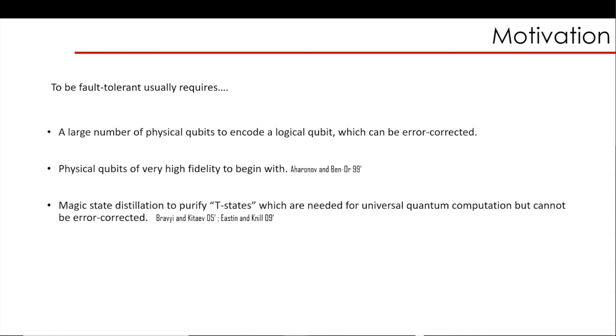And on top of that, you can only correct some processes this way. You actually need, on top of error correction, to add what is called state distillation, which introduces additional components needed to do universal quantum computation. This also complicates things and adds a lot of overhead to your already huge resources.